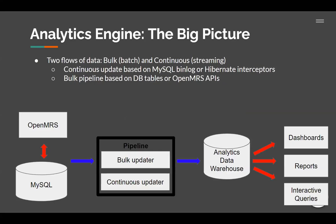So as I said, there are some prototypes which are based on this big picture, but it's still far from a production-ready product. On the left we have OpenMRS and MySQL. And at the end we want to get to some dashboards and reports based on that data. The blue arrows in the middle is our main focus. We will have two ways of extracting data from MySQL. One is through a continuous pipeline — any time a change happens in OpenMRS, it is transformed into the downstream analytics data warehouse. And we also have a bulk mode that when people want to bootstrap their warehouse, they can run that to transform the whole data into that warehouse.